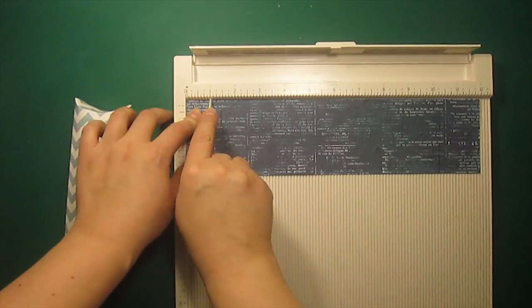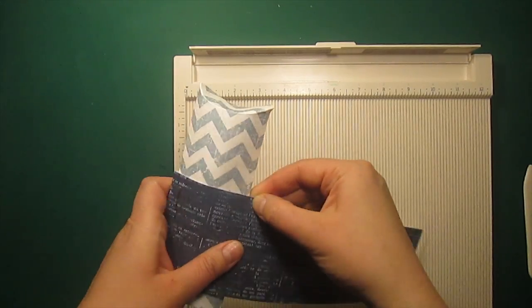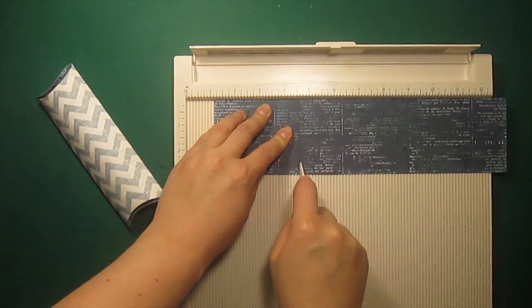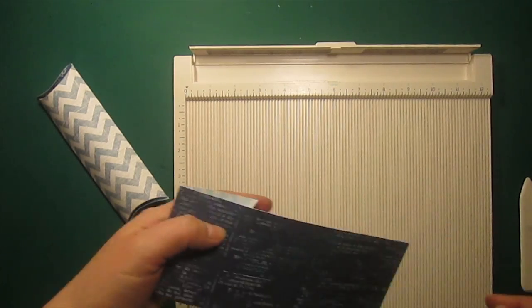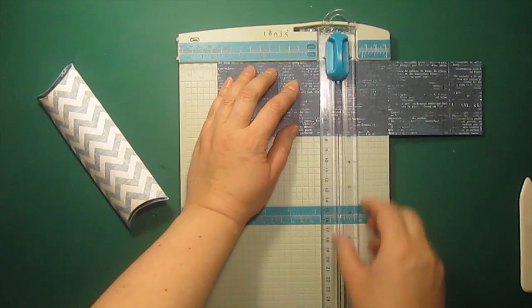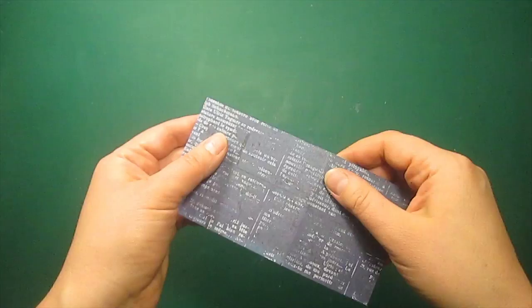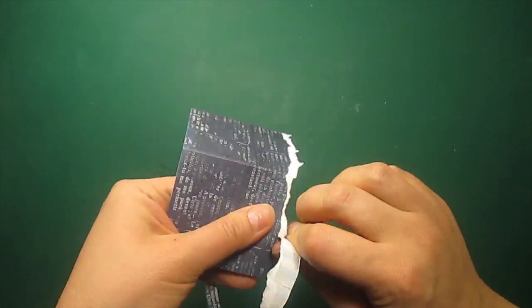To decorate my treat box I'm making a strip using a paper trimmer and a scoring board. Now I'm going to create some torn edges.